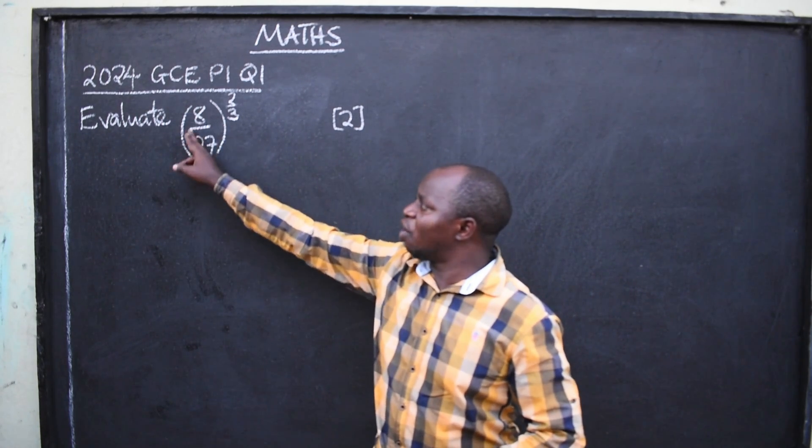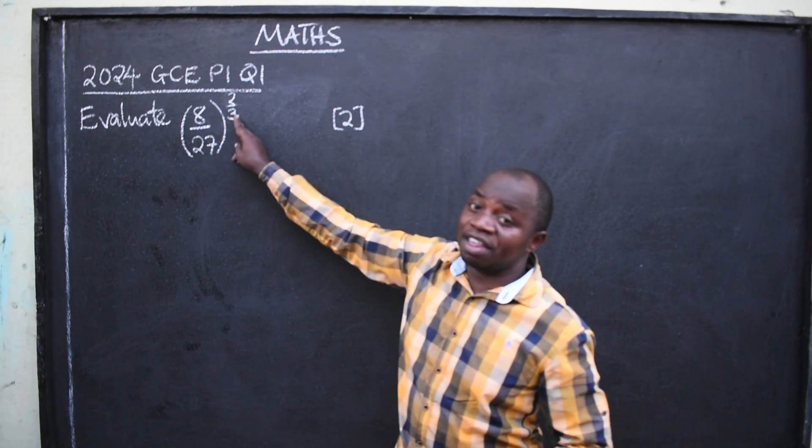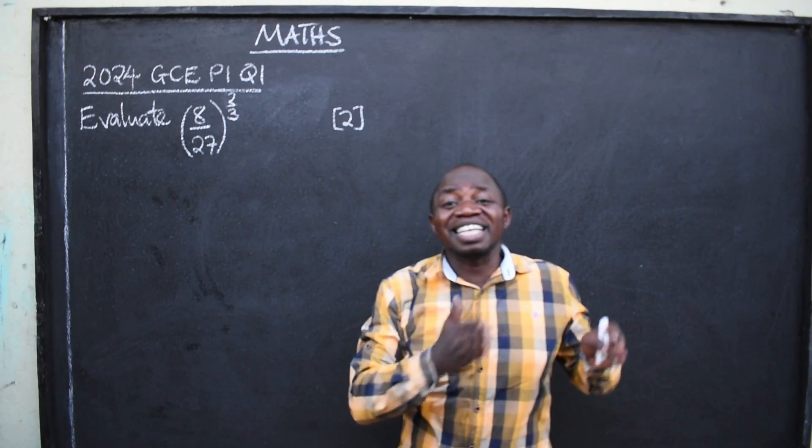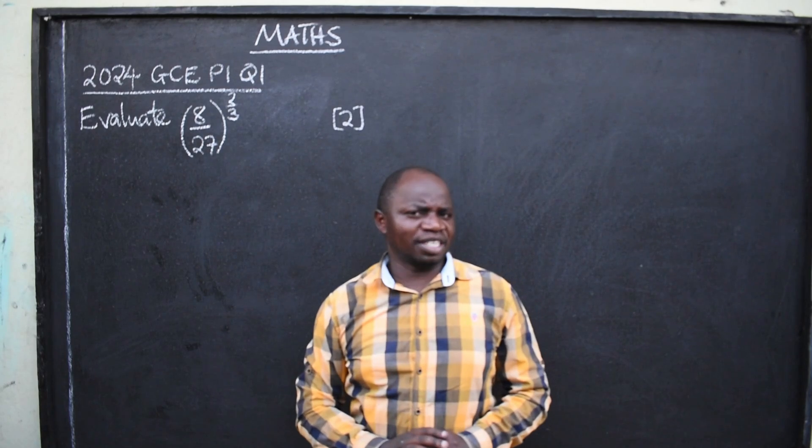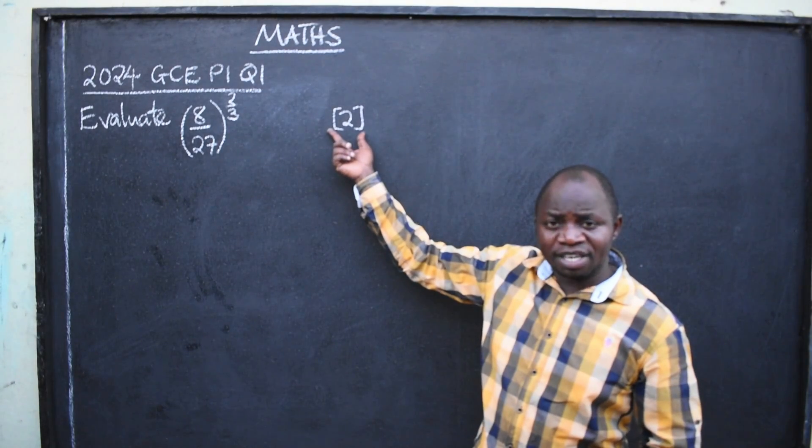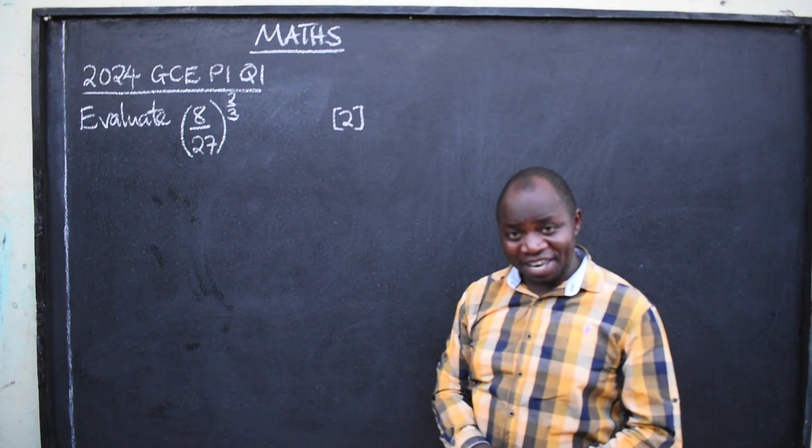In brackets, we have 8 over 27 raised to the power 2 over 3. We are taught to do what? To evaluate, meaning you find the exact value of this without the calculator. How do you get that? Total number of marks, 2.